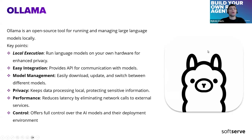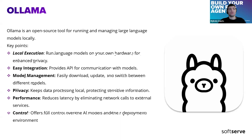Now let's talk about Ollama. Ollama is an open-source tool for running and managing large language models locally. A few key points: first, local execution — we are running LLMs on our own hardware for enhanced privacy. Second, easy integration — Ollama provides an API for communication with models, which is really convenient. Third, model management — we can easily download other models, update existing ones, or switch between different local models, which is also a great feature.